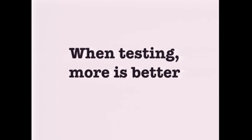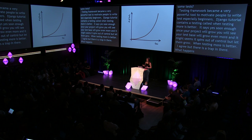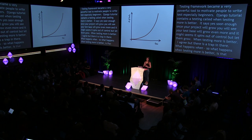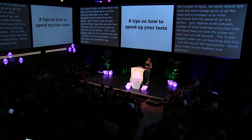The Django tutorial contains a section called 'When testing, more is better.' It says that as your project grows, your test base will grow even more and it might seem like it spins out of control — but just let them grow. However, there's a trap. With time we see an almost exponential growth of test numbers. We rarely delete test code. Since Django gives us all the tools and encourages functional tests, the speed of our tests suffers. More tests means longer execution time, slower tests means slower feedback loop. So I assembled three tips on how to speed up your tests.